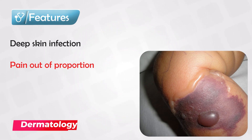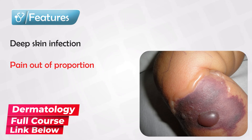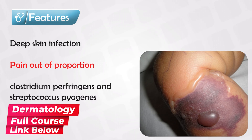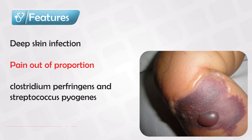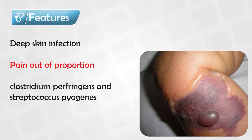This is especially true at the early stages, so you might look at the skin and you see some erythema or induration. But all the pathology is underneath the skin, so the patient presents with pain out of proportion. The most causative organisms are anaerobics, like Clostridium perfringens and Streptococcus pyogenes.